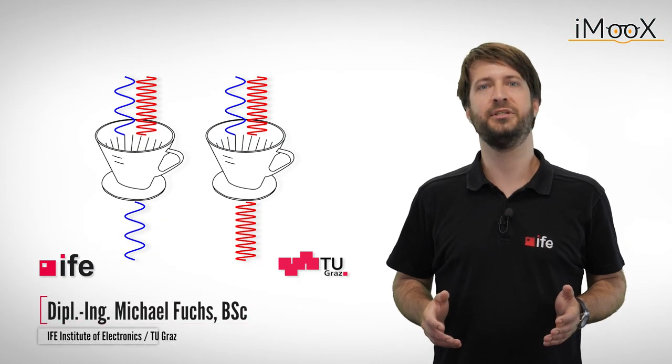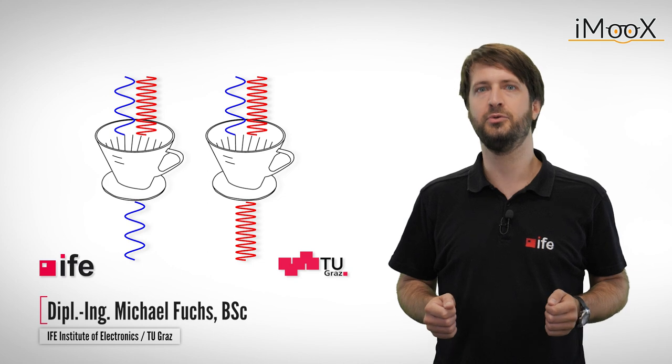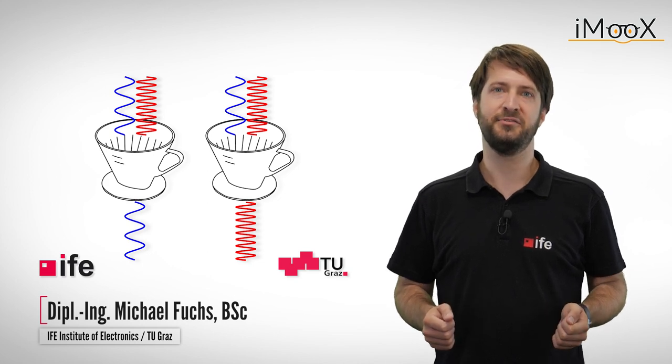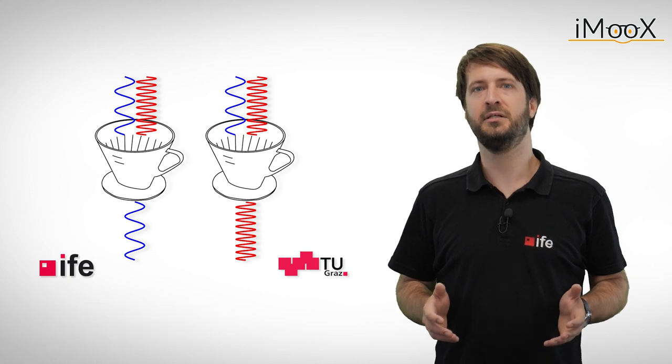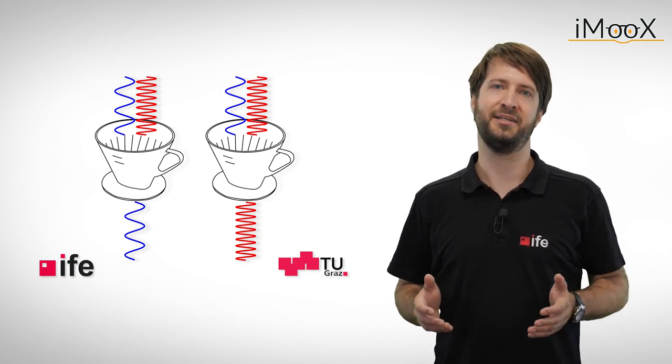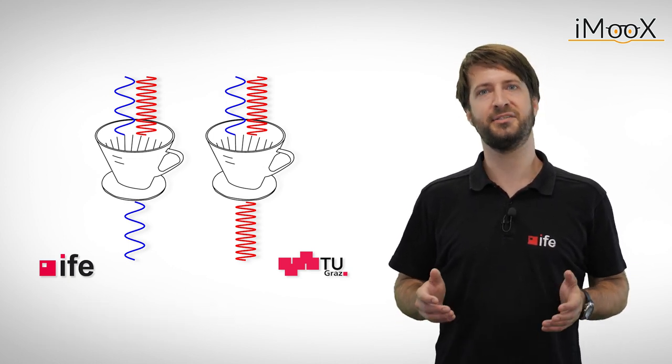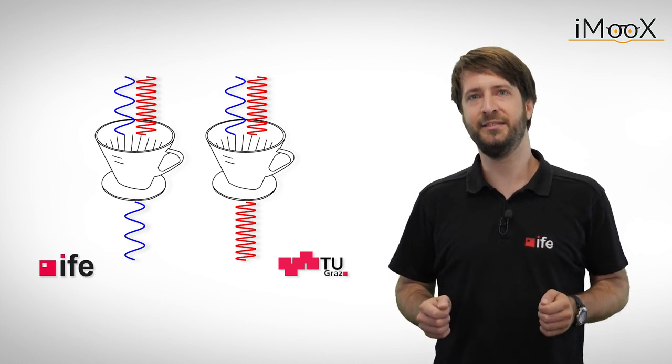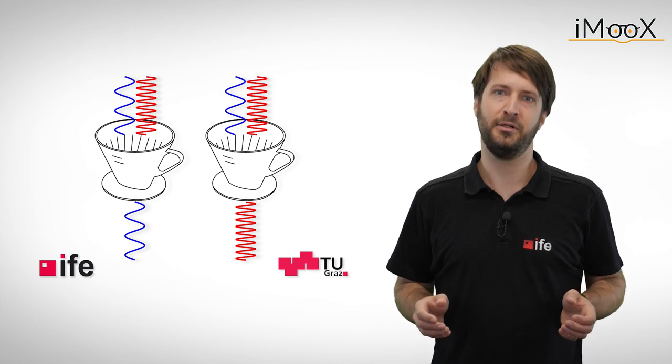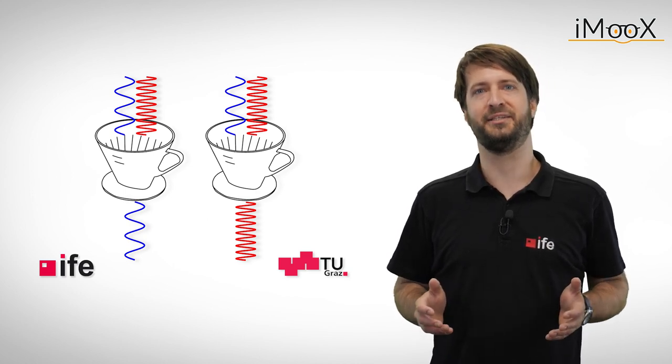In our last video we discussed one of the simplest filters used in electronics, a passive first-order RC filter. This filter can attenuate high-frequency AC signals while it passes through low-frequency AC signals. As we have already seen, this little circuit does the trick in principle, but its behavior is far from ideal.